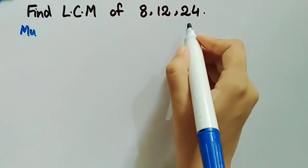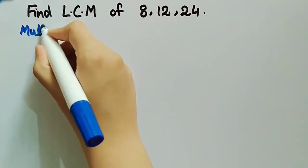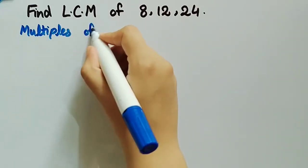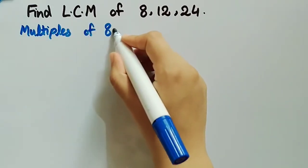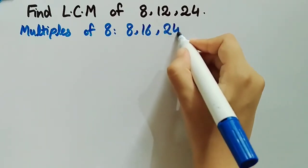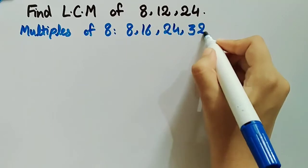Firstly we will write multiples of 8, which are 8, 16, 24, 32, and so on.